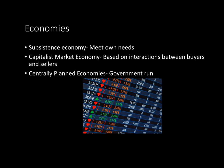Now let's get into economies. It's important to have a general understanding of different types of economies because once we get into later topics such as a carbon tax or a cap-and-trade system, it's important to have a backbone understanding of how economies work. A subsistence economy meets all of its own needs and doesn't trade much with other countries. A capitalist market economy is based on interactions between buyers and sellers. A centrally planned economy is completely government-run and regulated. Most major world economies have a mixed economy, somewhere in between all three — nobody really has a fully capitalist or fully centrally planned economy.